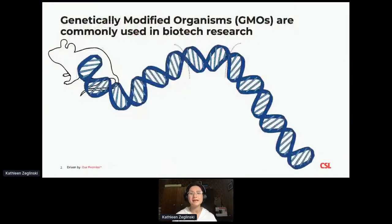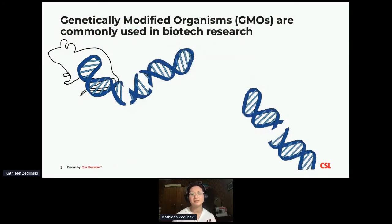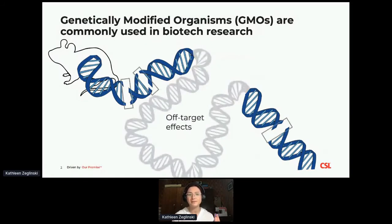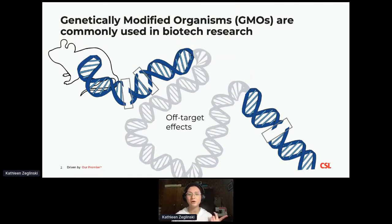Genetically modified organisms are increasingly common in preclinical pharmaceutical research. But when we edit DNA to make a genetically modified organism — for example, inserting a new sequence of interest into a genome — there are often a lot of off-target effects. So before we can use a GMO in any sort of further research, it really needs to be characterized. But this characterization process generates a really large amount of sequencing data. And if we want to interpret these modifications, whether they be on or off target, in a biologically meaningful context, visualization is really essential.